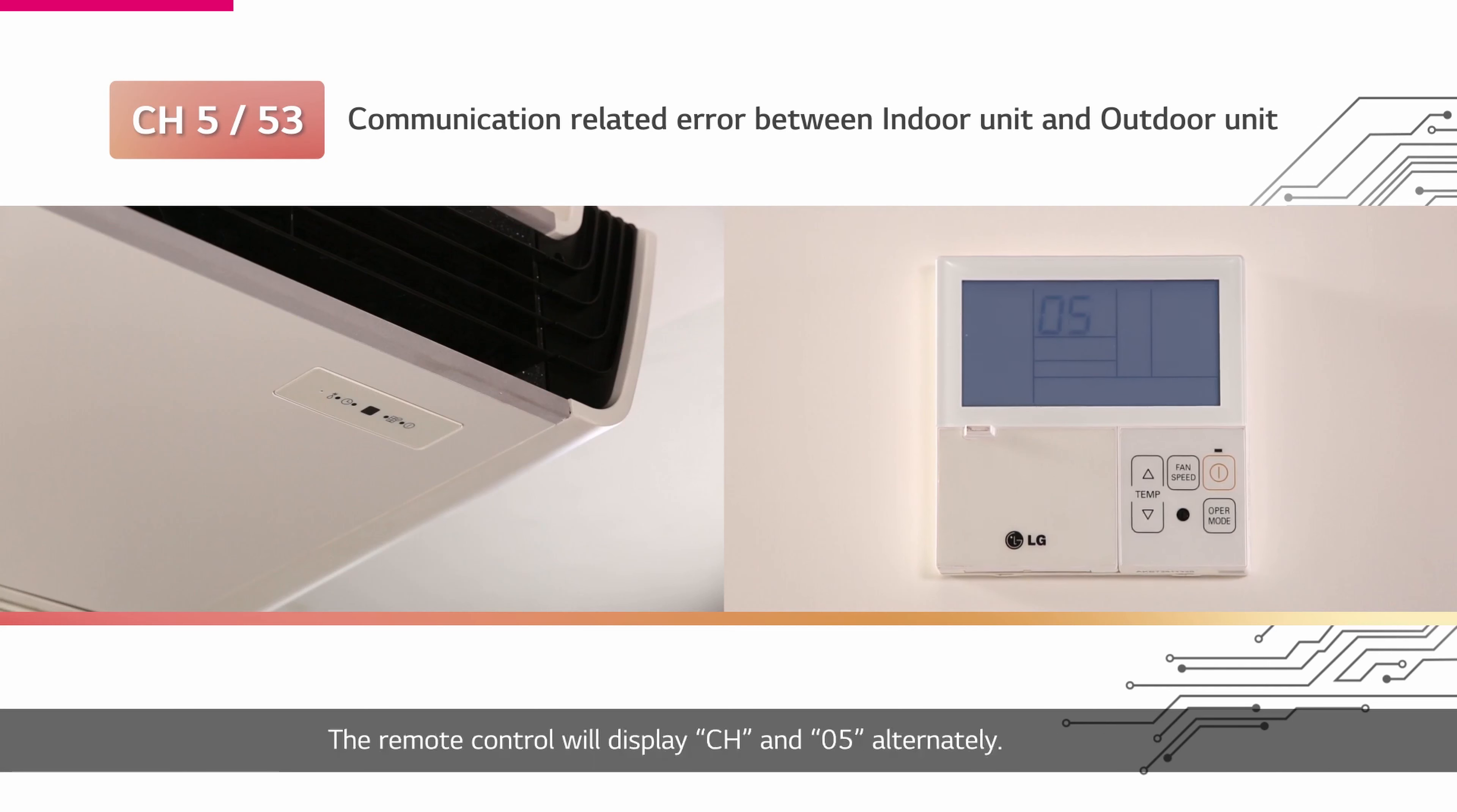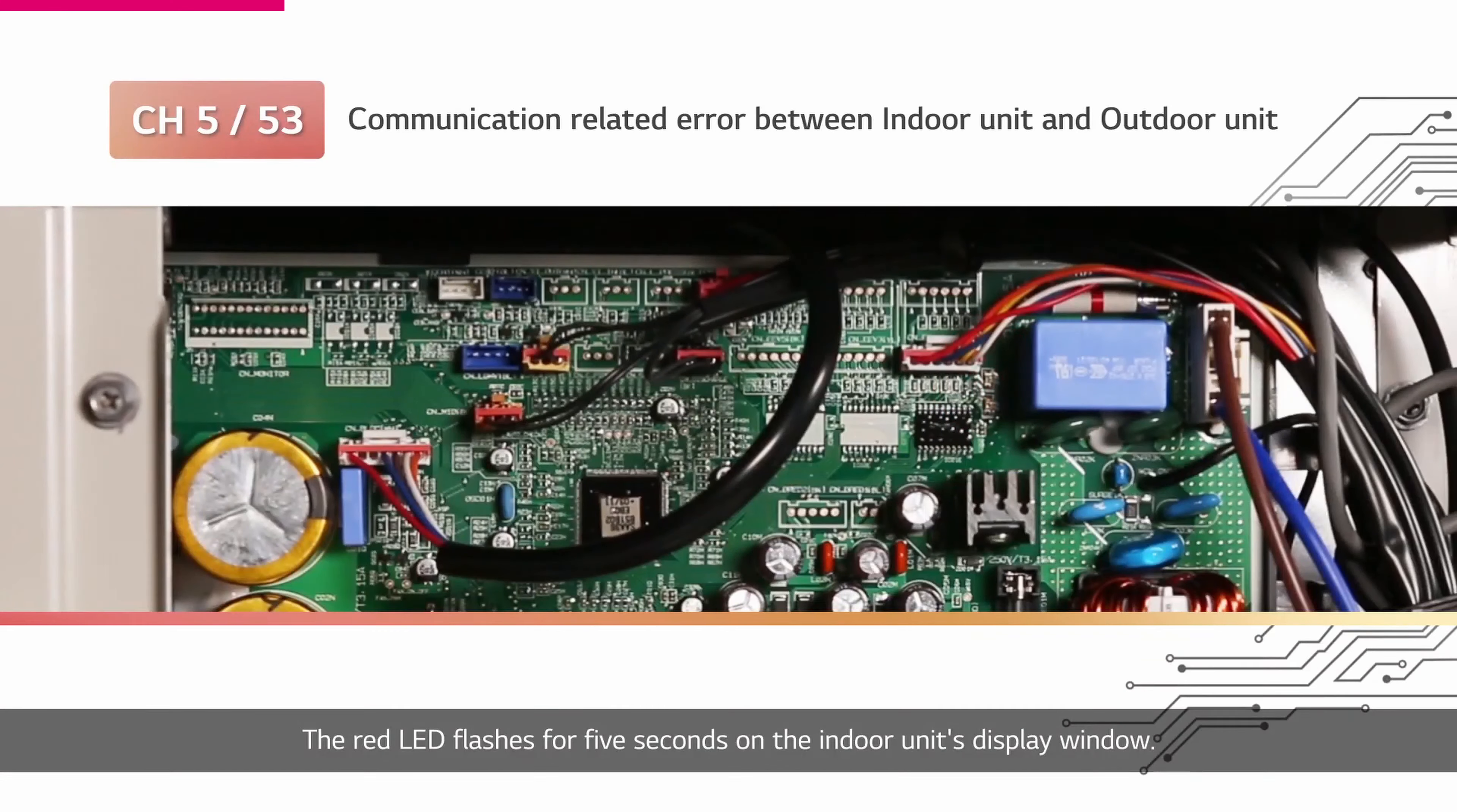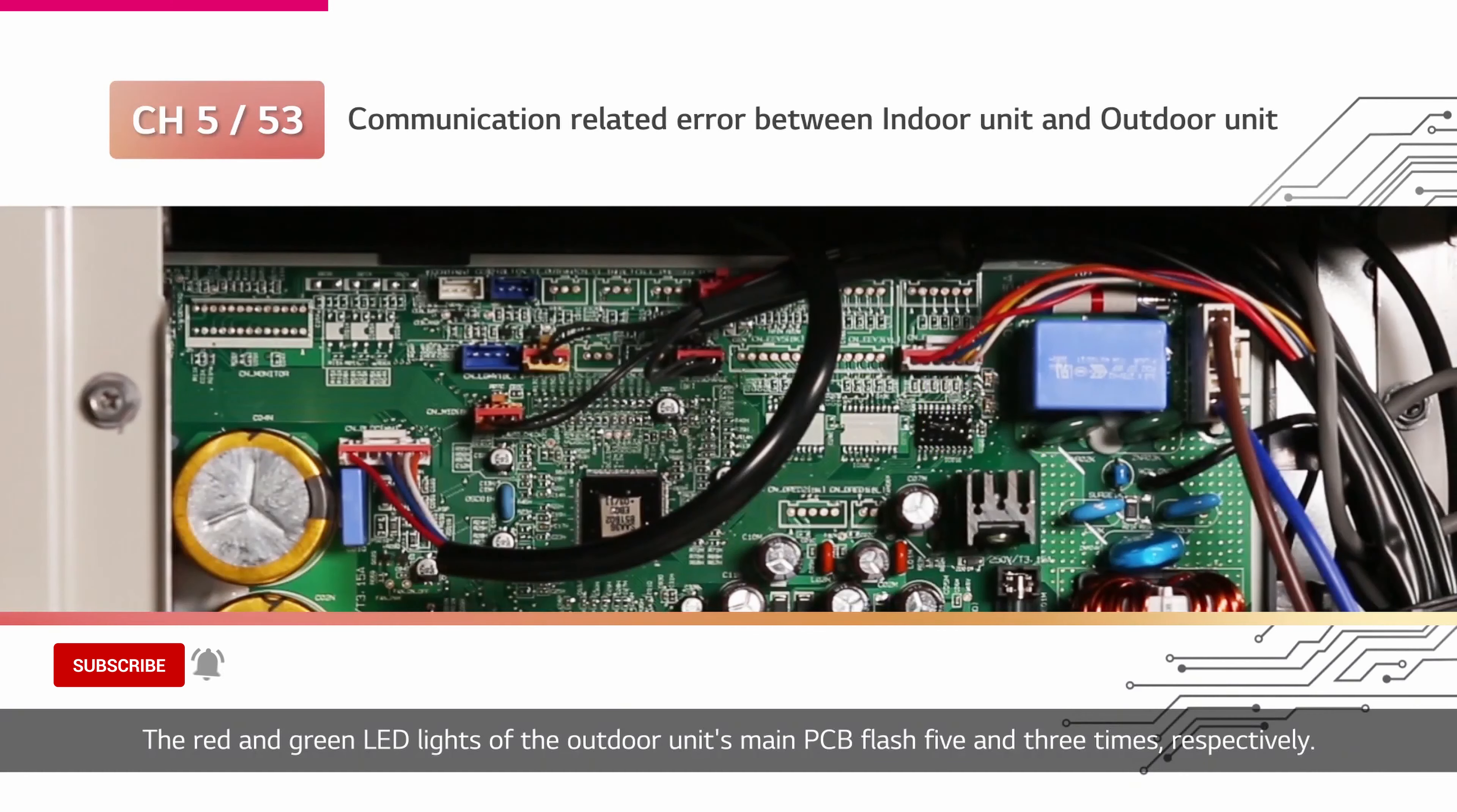The remote control will display CH and 05 alternately. The red LED flashes for 5 seconds on the indoor unit's display window. The red and green LED lights of the outdoor unit's main PCB flash 5 and 3 times respectively.